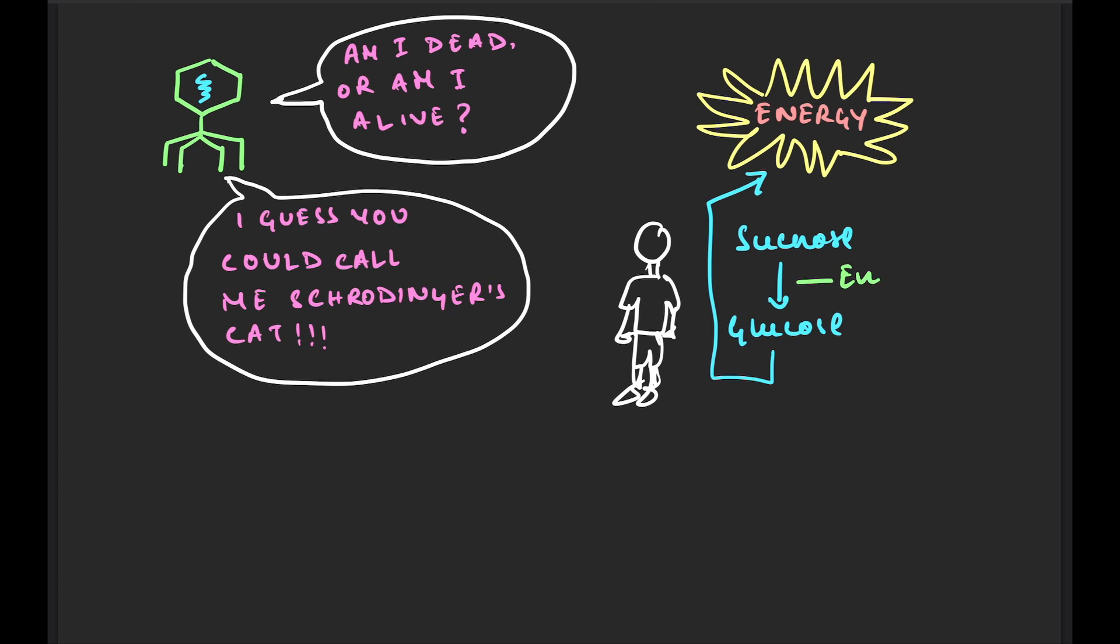But this conversion of sucrose to glucose and eventually to energy is only possible because of enzymes. A human body is able to produce these enzymes because we have already inherited the code required to develop these enzymes in the form of our DNA.